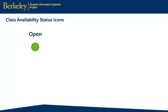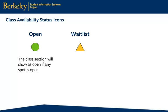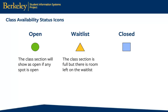The green circle for Open will show if there are any spots available in the class section, even if the spot is reserved for a specific type of student. A yellow triangle for the waitlist will appear if the section is full but there are still waitlist spots left. The blue square for Closed indicates that both the class section and the waitlist are full.